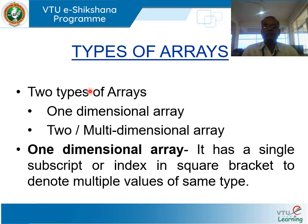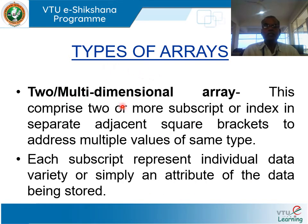Types of arrays. There are two types of arrays. One-dimensional array, which has a single subscript or index in square brackets to denote multiple values of the same type. Two or multidimensional array, which comprises two or more subscripts or indices in separate adjacent square brackets to address multiple values of the same type. Each subscript represents an individual data variety, or simply an attribute of the data being stored.